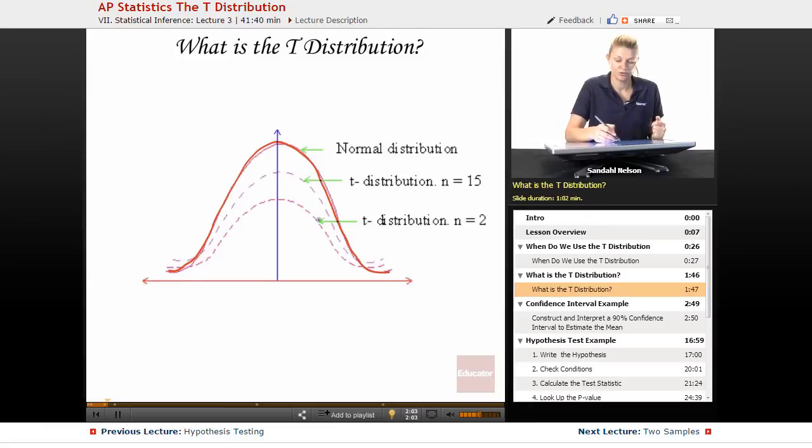So notice that the t-distribution looks a lot like the z-distribution, but that there's more than one. And there's in fact pretty much infinitely many t-distributions. But the bigger your sample size, the closer the t-distribution gets to the normal distribution.